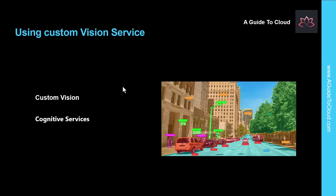Creating an image classification or object detection solution with custom vision requires two types of resources in your Azure subscription. The first is a custom vision resource — a dedicated resource for the custom vision service, which can be either a training or a prediction resource. The second is a cognitive services resource — a general cognitive service resource that includes custom vision along with many other cognitive services. You can use this type of resource for training, prediction, or both.